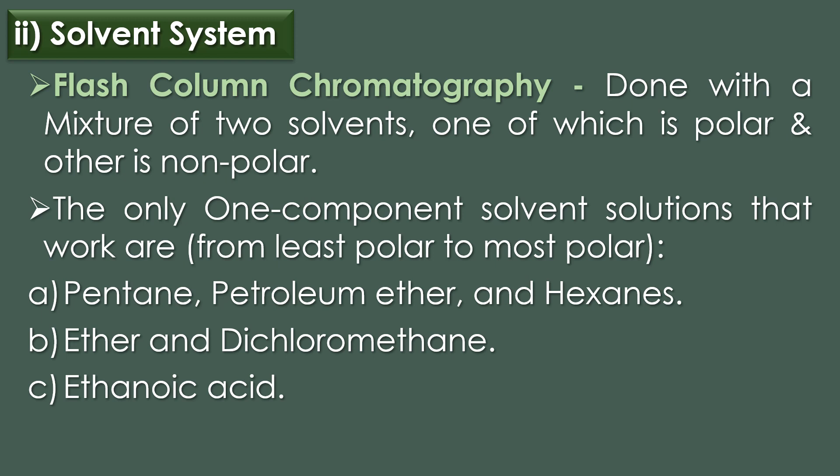The second component of flash column chromatography is the solvent system. Flash column chromatography is generally done with a mixture of two solvents, one polar and the other non-polar. Single-component solvent solutions range from least polar to most polar, including pentane, petroleum ether, and hexanes under hydrocarbons, ether and dichloromethane which have very close polarity, and finally ethanoic acid.